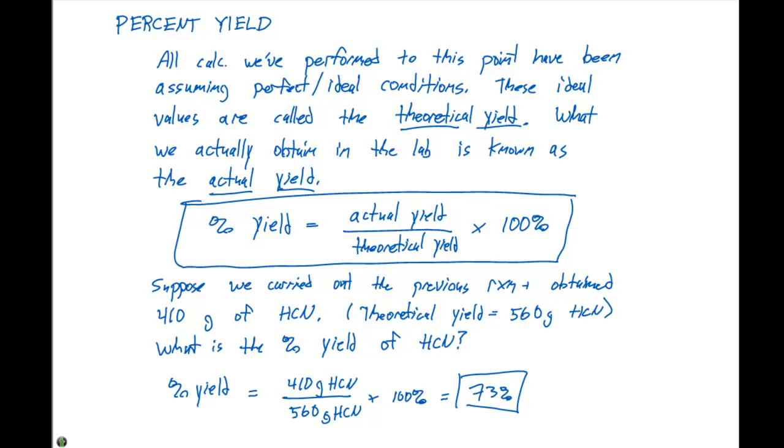Typically when we calculate a percent yield, we need to determine the theoretical yield from the data that was given. They will give you the value obtained in the laboratory. Then you take that actual yield determined in the lab, divided by the theoretical yield that you calculated, multiply by 100%, and you'll get the percent yield.